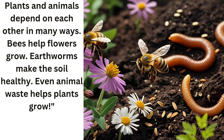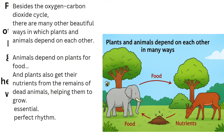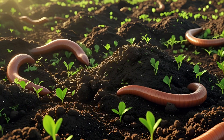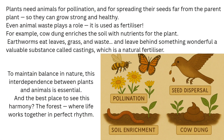Plants and animals depend on each other in many ways. Bees help flowers to grow. Earthworms make the soil healthy. Even animal waste helps plants grow. Besides the oxygen–carbon dioxide cycle, there are many other beautiful ways in which plants and animals depend on each other. Animals depend on plants for food, and plants also get their nutrients from the remains of dead animals, helping them to grow. Plants need animals for pollination and for spreading their seeds far from the parent plant, so they can grow strong and healthy. Even animal waste plays a role — it is used as fertilizer. For example, cow dung enriches the soil with nutrients for the plants.